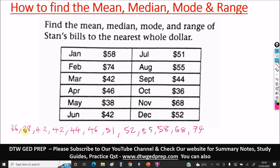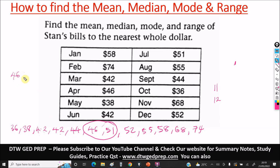Sometimes finding the median is easy when the number of data values is odd — for example, if there were 11 values, you'd quickly get one middle number. But here we have 12 — an even number — so two numbers will be in the middle. Counting 5 from each end, you can see that 46 and 51 are the two middle numbers.